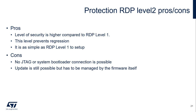RDP level 2 also has some pros and cons. In this level, there is no more JTAG or system bootloader connection possible. Update is still possible, but has to be managed by the firmware itself. You cannot download a new version through the debug port.